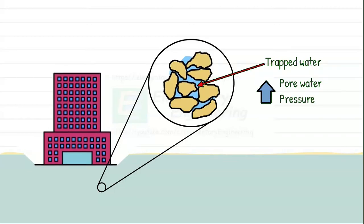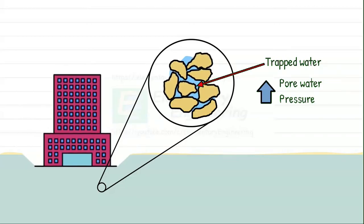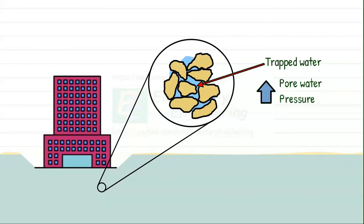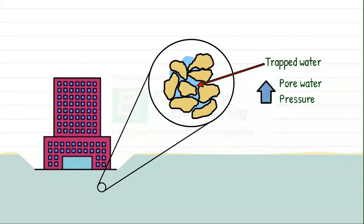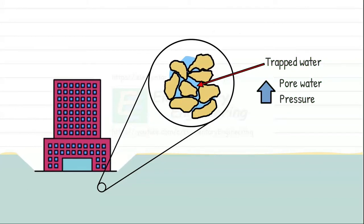Over time, this excess pressure dissipates as water slowly drains out, allowing the soil particles to settle closer together. This gradual compression of the soil due to the water drainage is what we call the consolidation settlement.